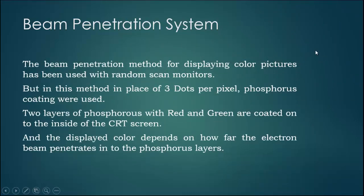Beam penetration system. The beam penetration method for displaying color pictures has been used with random scan monitors. But in this method, in place of three dots per pixel, phosphorous coating were used. Two layers of phosphorous with red and green are coated onto the inside of the CRT screen.